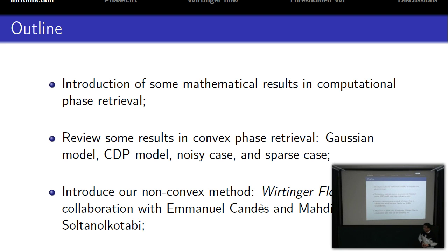First, I will review some mathematical results in this area, such as results for the sampling rate under Gaussian model and the sampling rate for coded diffraction patterns model. I will also review some results for noisy phase retrieval and sparse phase retrieval. Then I will introduce a non-convex phase retrieval method, which is gradient descent.